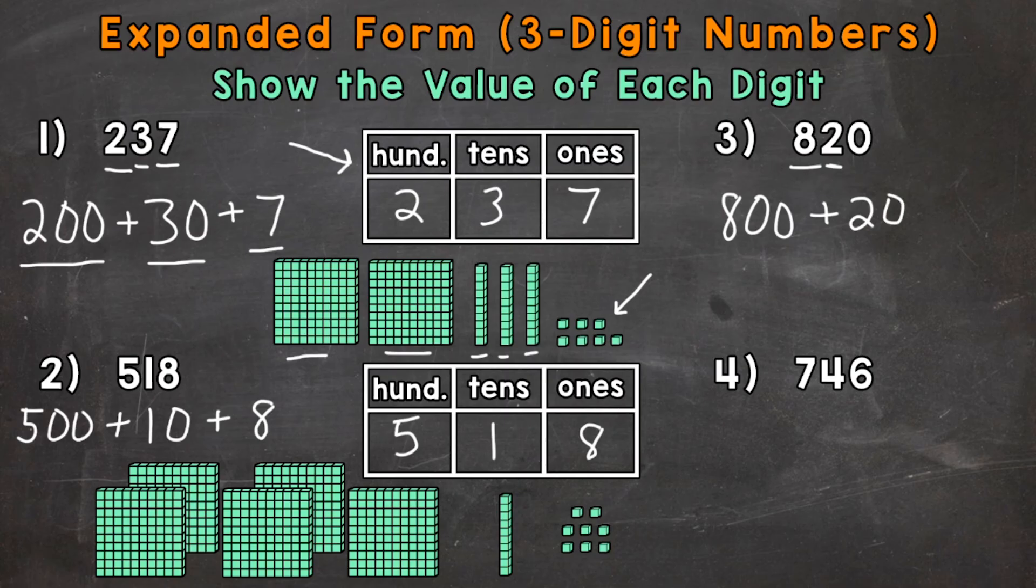Now in the ones place, we have a zero. That's a placeholder zero sitting in the ones place. So it does not have a value that we need to represent in our expanded form. So we can skip over the zeros whenever we see a zero and we're putting that number into expanded form. So we would be done with number 3. 800 plus 20. We expanded out the value of each digit.